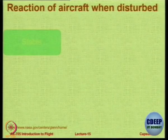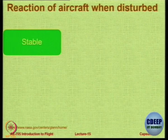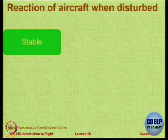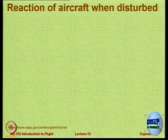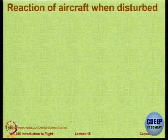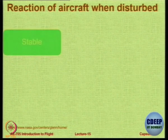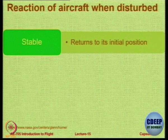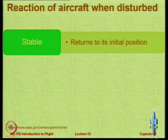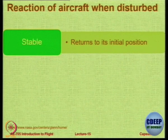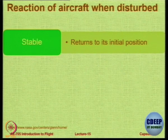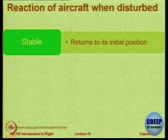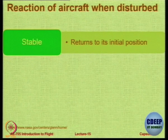Let us see what is the reaction of an aircraft when it is disturbed. The aircraft is in a trimmed condition — forces are in balance, moments are in balance — and now some disturbance acts on it. Its reaction determines its stability. The aircraft is considered stable when, after being disturbed, it comes back to its initial position without any action of the pilot. If the pilot has to bring it back, that is called control; stability means returning on its own.